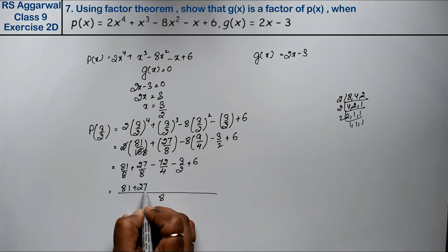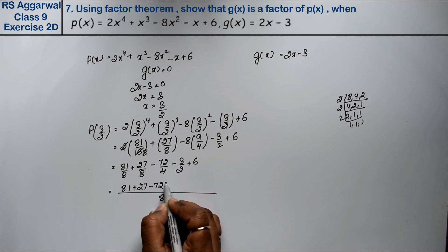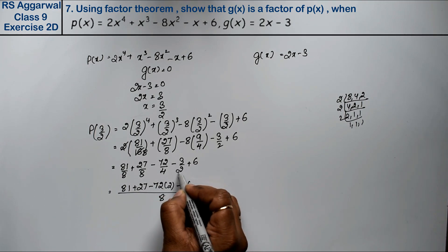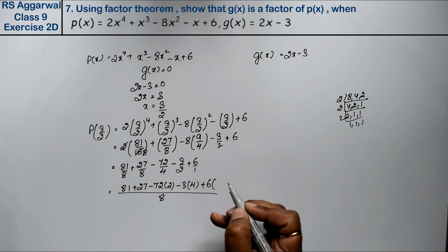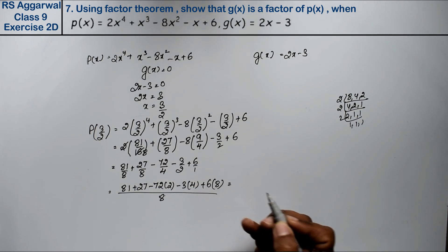81 plus 27 as it is minus 72 into, 4 times 2 is 8, right? Minus 3, 2 times 4 is 8, plus 6. Below this nothing, 1 times 8 is 8.